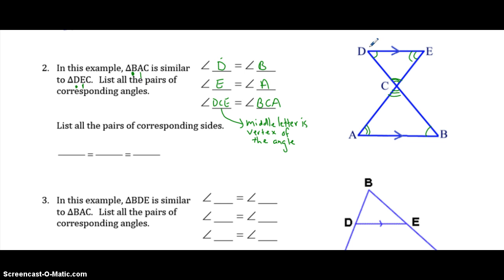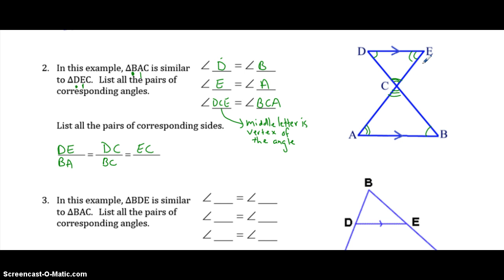The corresponding sides: DE would go with BA — not AB — because it goes one tick to two ticks. DE goes with BA. DC, one tick to three ticks, would go with BC, one tick to three ticks. And EC, two ticks to three ticks, would go with AC, two ticks to three ticks.